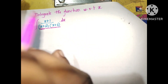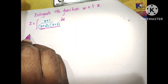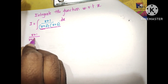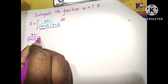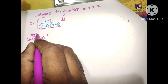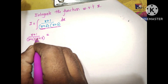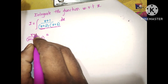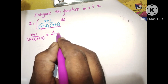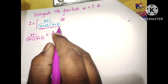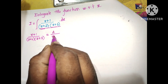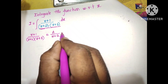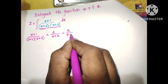Now I am going to convert the rational form into partial form. For a denominator with non-repeated linear factors, we write it as A divided by the first linear factor, that is A divided by x plus 2, plus B divided by x plus 3.